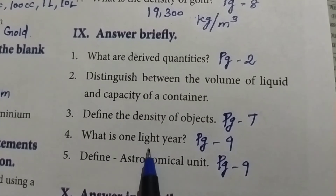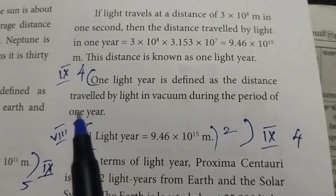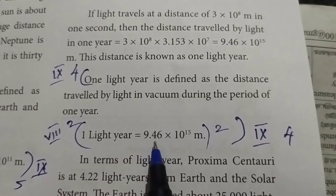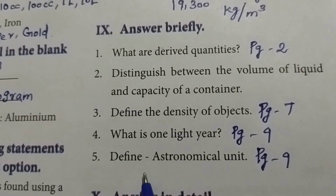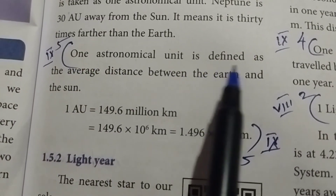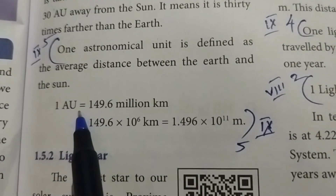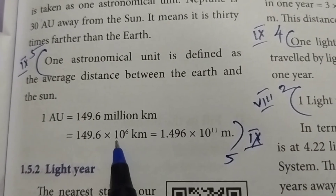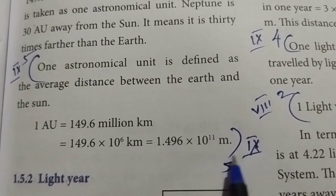Fourth question: What is one light year? Page number 9. One light year is defined as the distance travelled by light in vacuum during the period of one year. One light year is equal to 9.46 into 10 to the power of 15 metres. Fifth question: Define astronomical unit. One astronomical unit is defined as the average distance between the earth and the sun. One astronomical unit equals 149.6 million kilometres, equals 1.496 into 10 to the power of 11 metres.